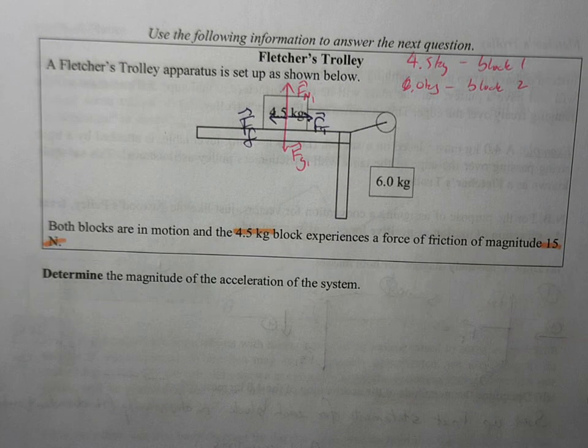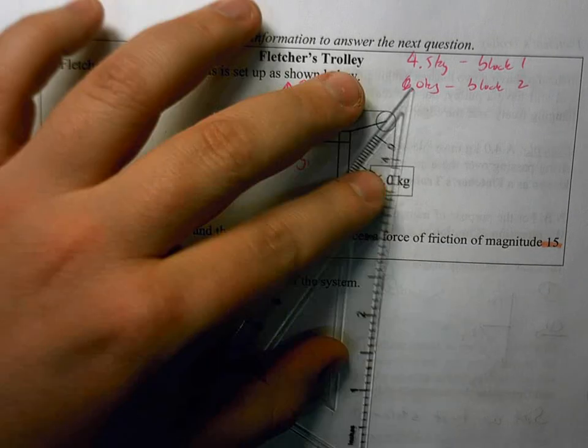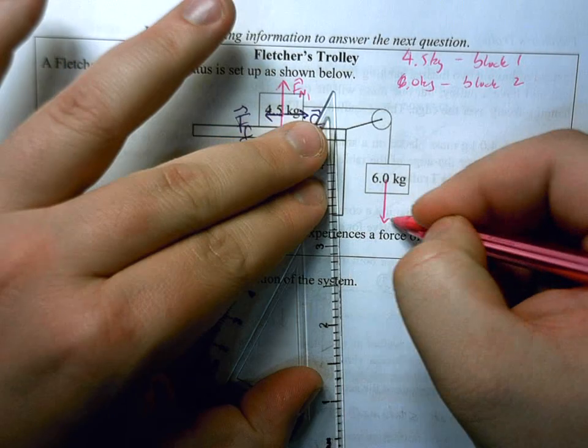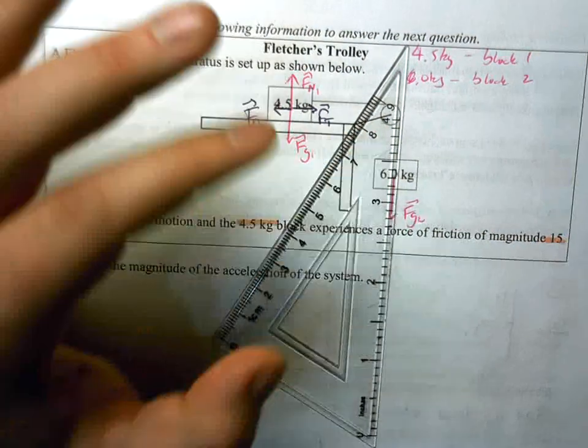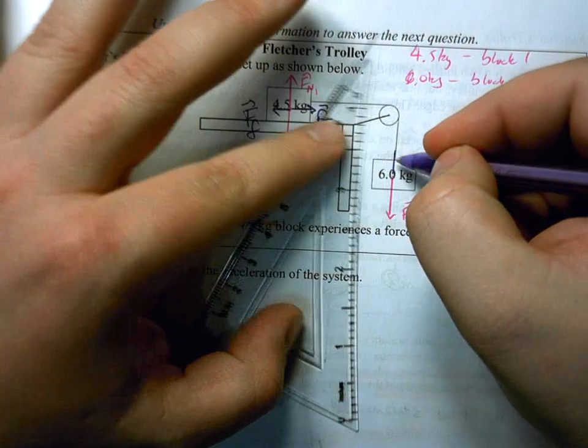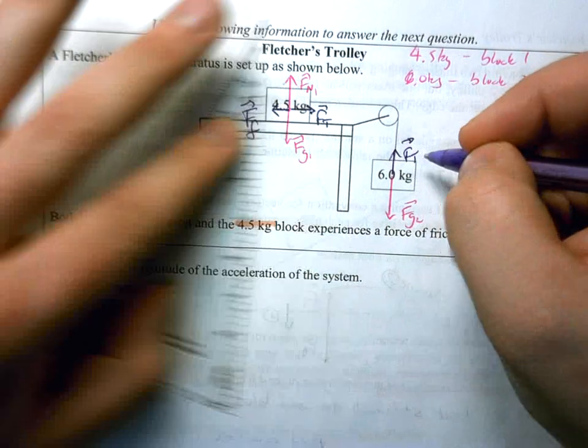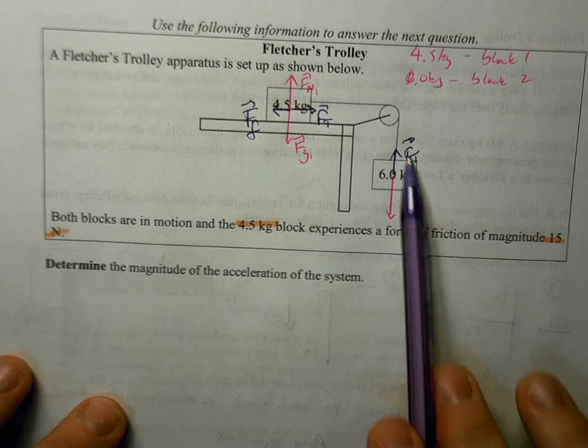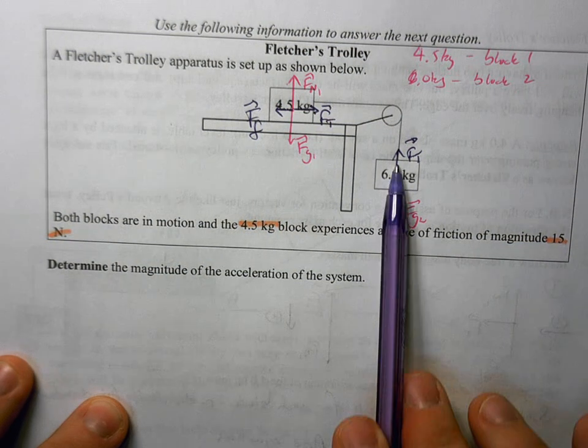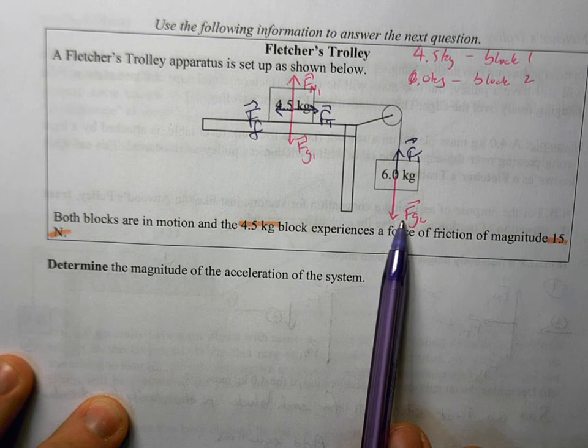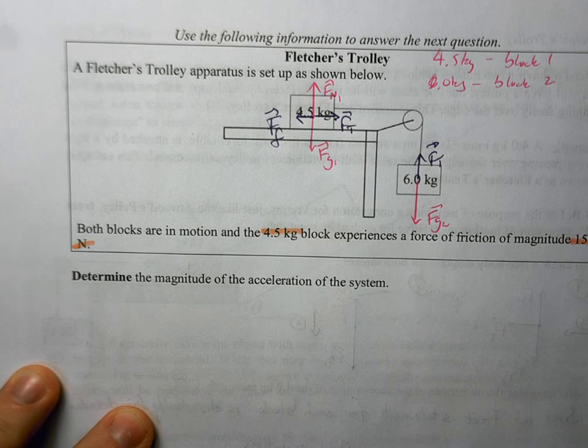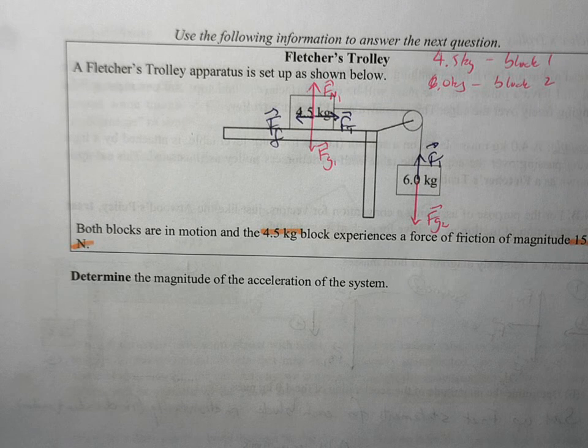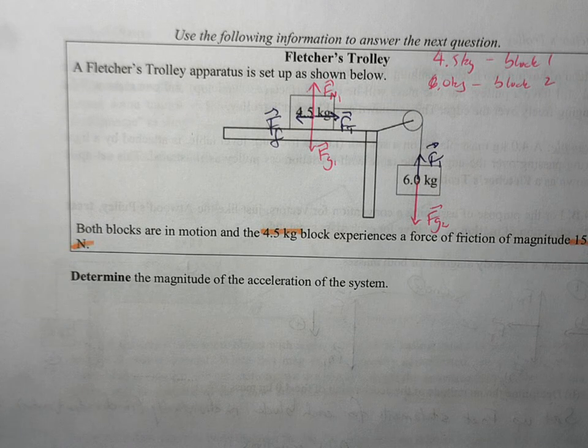Now, the second block, it's just going to have that force of gravity going down, and we're going to have this force of tension acting up to try and slow this down. This thing's accelerating downwards, so we want the net force to be down here, which means FG2 has got to be bigger than FT. With this block, we want it moving to the right, so we want the force of tension to be slightly greater than FF.